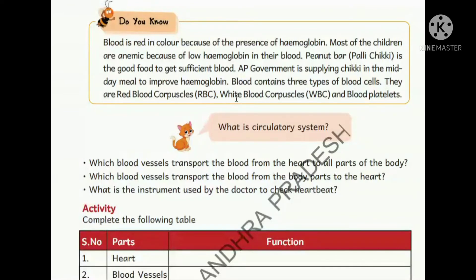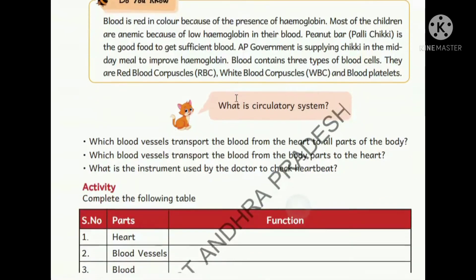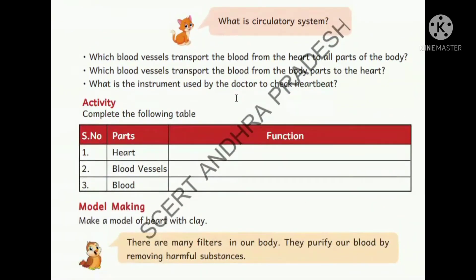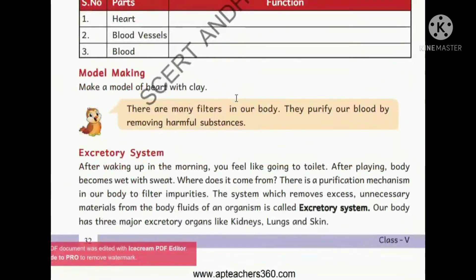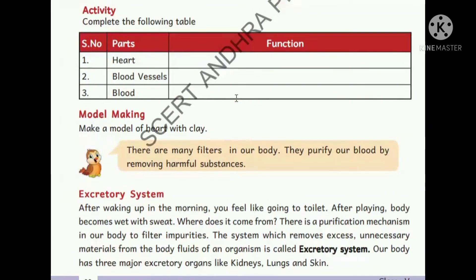Blood is red because it contains hemoglobin. Hemoglobin is very important - if you have a low amount, you will get anemia or many diseases, so please take the iron tablets given in your schools. We have three types of blood cells: red blood cells, white blood cells, and blood platelets. We will learn more about those in further classes.